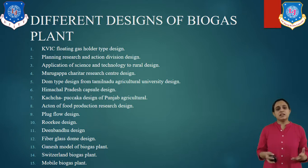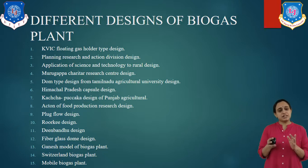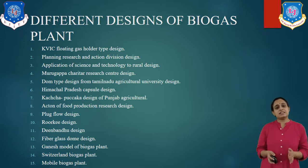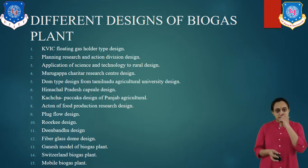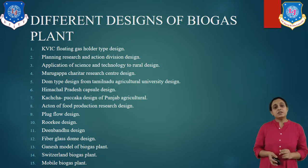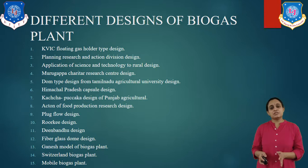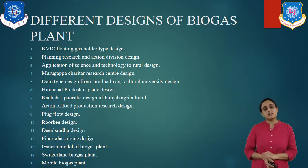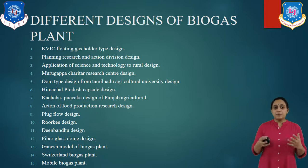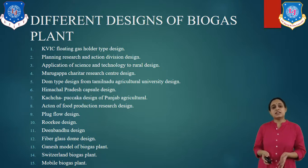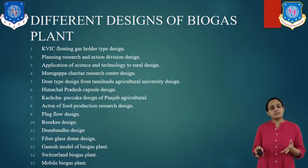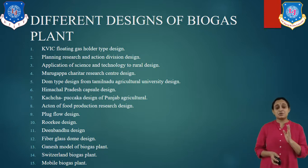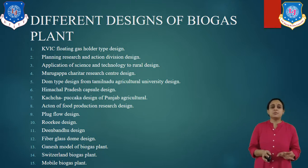The different types include: KVIC floating gas holder type design, which is a very popular model; the Pragati Research design; application of science and technology to rural design; Murgappa Charita Research Centre design; dome type design from Tamil Nadu Agricultural University; Himachal Pradesh capsule design; Kaccha Pakka design of Punjab Agricultural; plug flow design; Roorkee design; Deenbandhu design; piper gas dome design; Kanish model; Switzerland biogas plant; and mobile biogas plants. The list is not yet exhausted — there are nearly more than 50 types of different biogas plants.